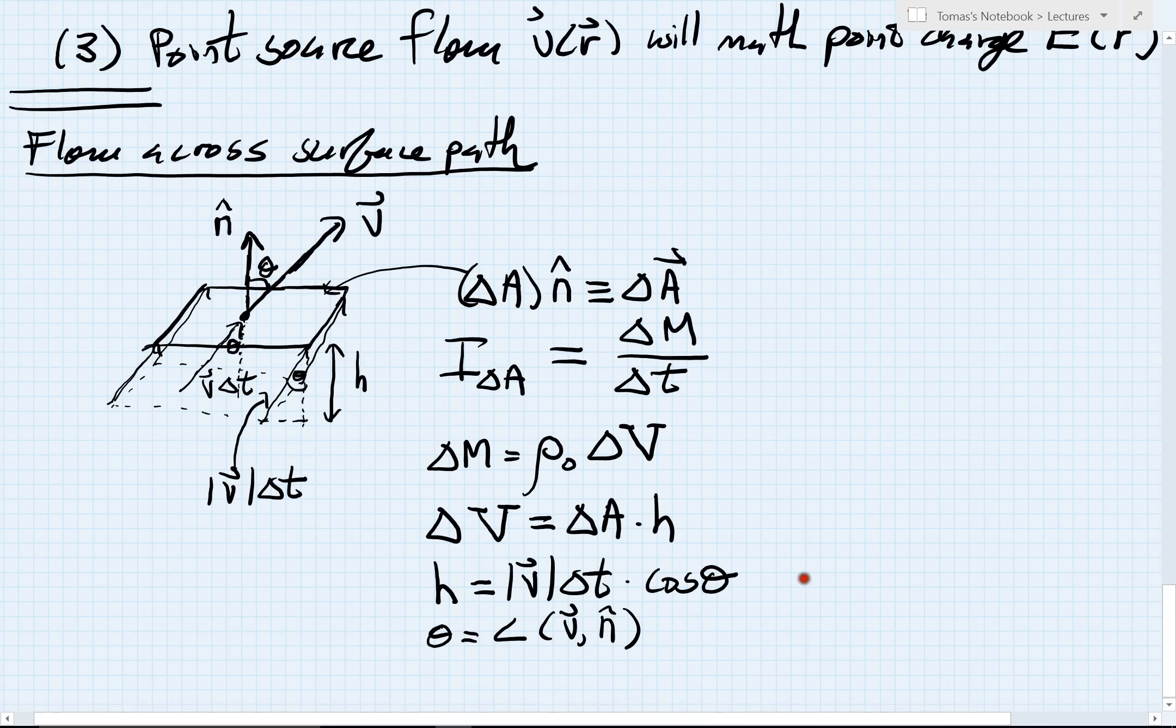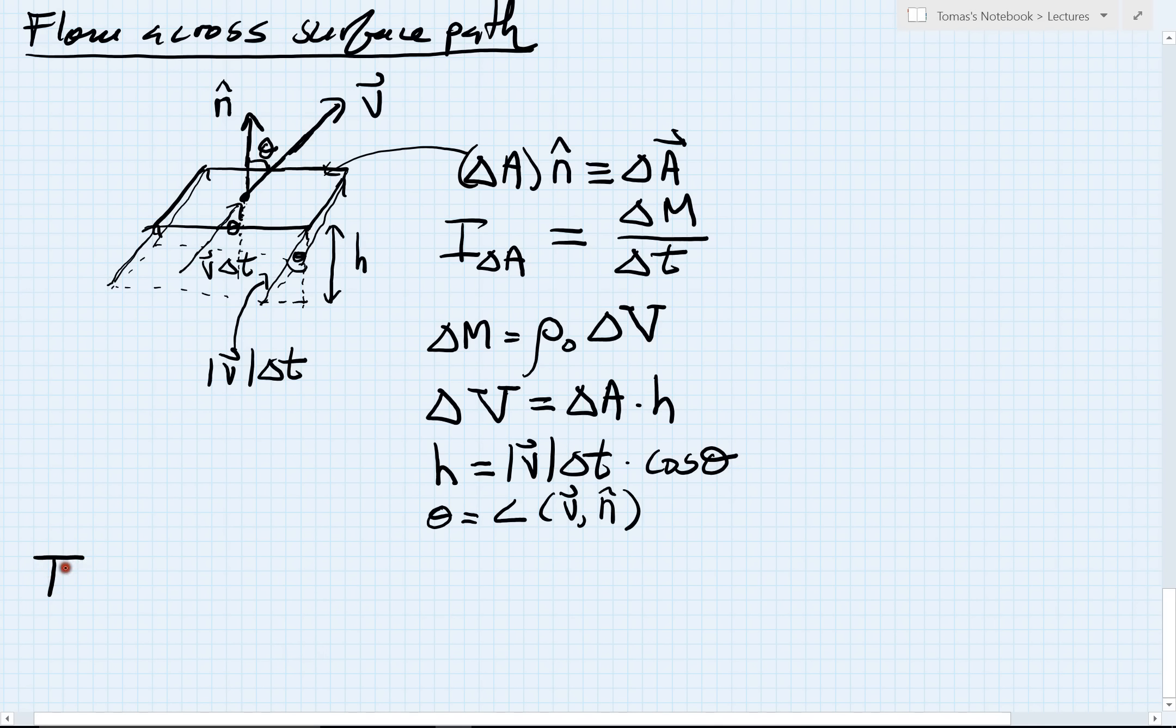At this point, we're ready to put this all together. The current going through that patch delta A is going to equal the change in mass, which is rho delta, with a numerator and denominator. The denominator was just delta T. The numerator was the delta M, which was rho naught times the volume. The volume was delta A times h, so that will be delta A. H itself is the magnitude of the velocity vector times the time interval delta T times the cosine of theta.